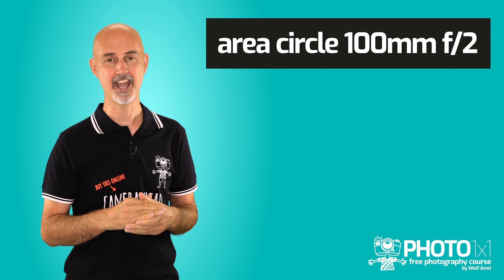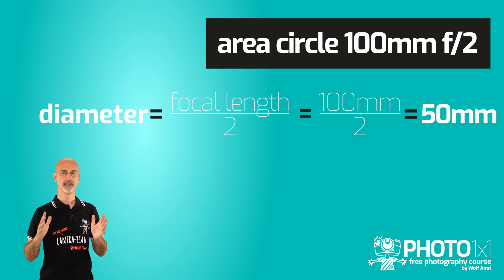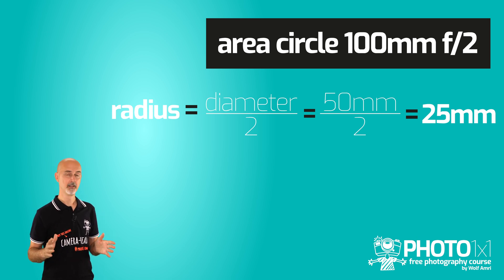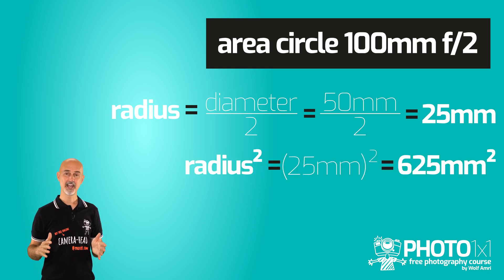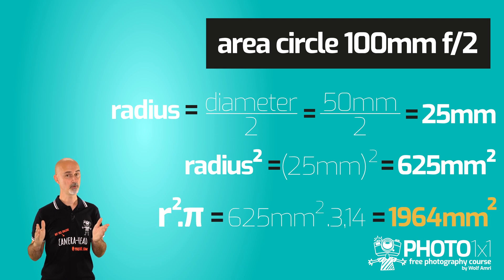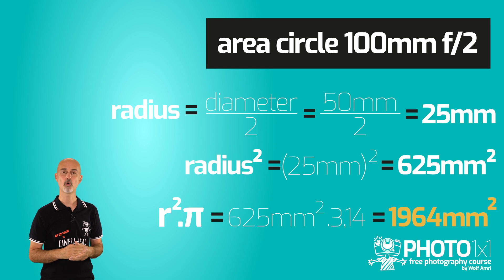So let's quickly calculate the area for our 100mm f/2 example. The diameter is 100 over 2, so 50mm. The radius is half the diameter, so that would be 25mm. Now let's square that and we get 625mm². And then we multiply that with π. The result — and therefore the area of the circle, or the area of the aperture opening — is 1964mm².